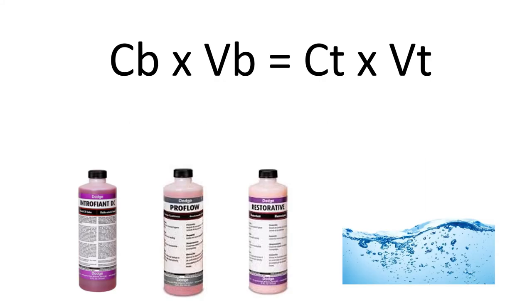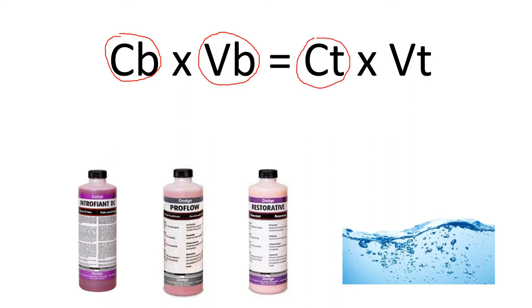We will begin with our calculation and formula here at the top. CB will represent the index of your bottle. VB will represent the volume of your bottle. CT, of course, will represent the percent solution strength. And VT will represent the total volume of your solution.